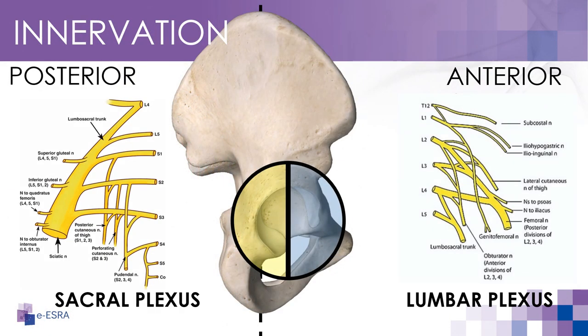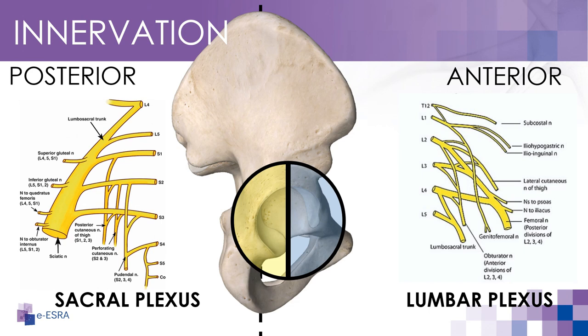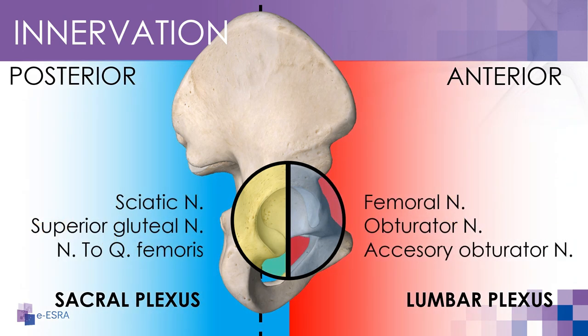The anterior hip capsule is innervated by branches arising from the lumbar plexus, specifically from L2 to L4. The posterior capsule is innervated by branches arising from the sacral plexus, most of which originate from the sciatic nerve. The anterior capsule is specifically innervated by articular branches from the femoral, obturator and accessory obturator nerves, while the posterior capsule is innervated by articular branches from the sciatic nerve, the nerve to quadratus femoris, and branches of the superior gluteal nerve.